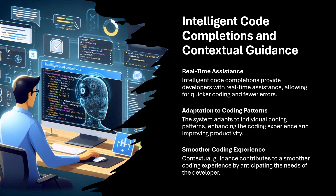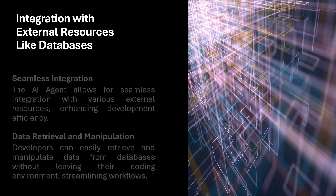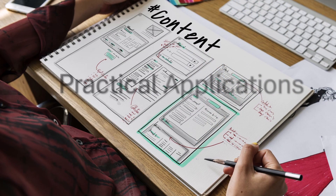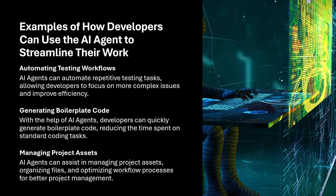The AI agent comes equipped with various features designed to streamline the development process. The AI agent can automatically modify files, install dependencies, and execute terminal commands, thereby reducing manual effort and minimizing the risk of errors. The AI agent enhances development efficiency while maintaining strict security protocols, requiring explicit user permissions for actions to protect sensitive information. With intelligent code completions and contextual suggestions, developers receive real-time assistance that adapts to their coding patterns, making the coding experience smoother and faster. The AI agent integrates seamlessly with external resources, such as databases, enabling developers to retrieve and manipulate data without leaving the coding environment.